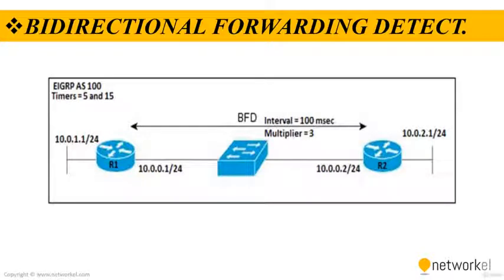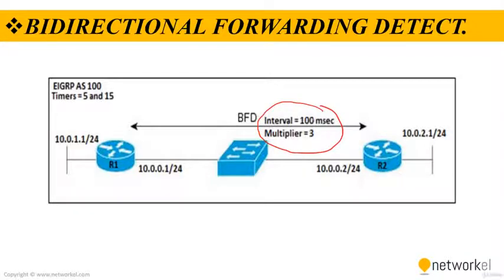On the screen, Router 1 and Router 2 are using BFD to keep track of reachability. BFD packets are being sent every 100 milliseconds, and if three consecutive packets are missed, BFD triggers a session failure and notifies EIGRP. The EIGRP timers are set to their defaults of 5 and 15 seconds.